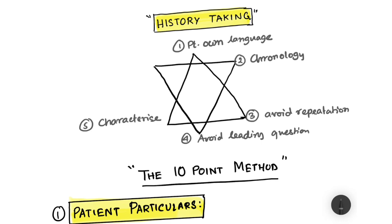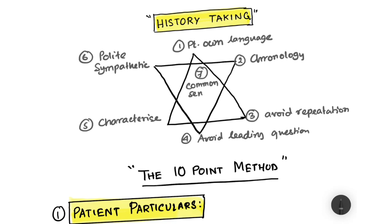Rule five: always characterize symptoms. If a patient says they have pain, characterize where it starts, the onset, duration, aggravating and relieving factors, and any radiation. If the patient complains of swelling, ask whether it's soft or hard, painful or not, and where it is. Rule six: always be polite and sympathetic to the patient — that way the patient opens up and gives you a better history. Rule seven: always use your common sense.